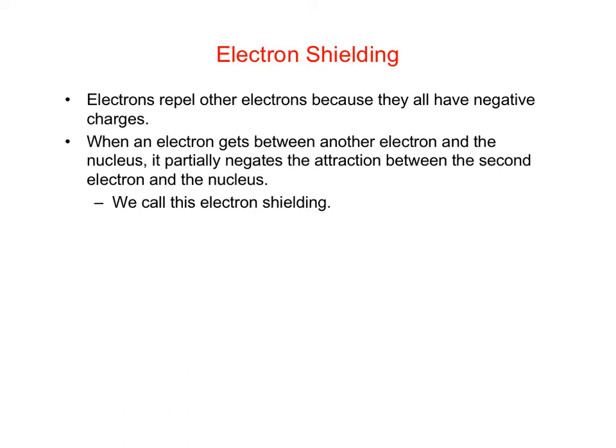Before we get into the specific periodic trends, we want to talk about electron shielding. Electrons are all negative and so we know that they repel each other. When an electron gets between another electron and the nucleus, that electron partially negates the attraction between the second electron and the nucleus. This is what we mean by electron shielding.